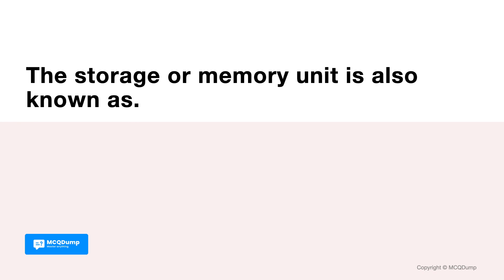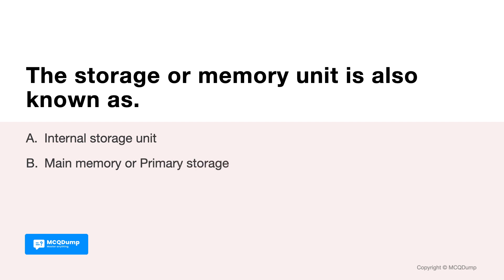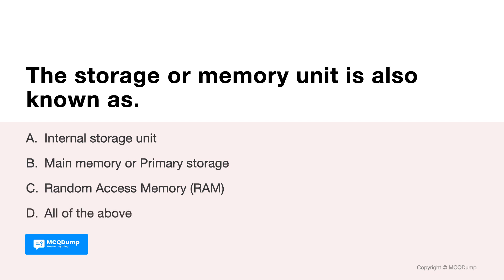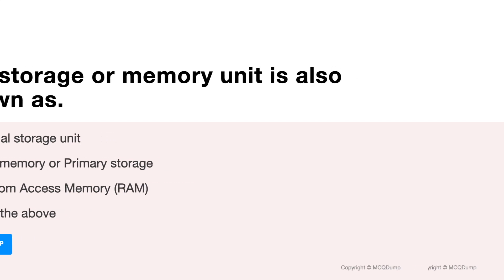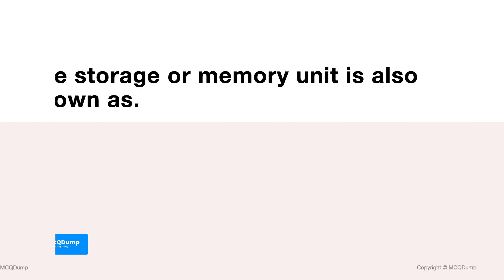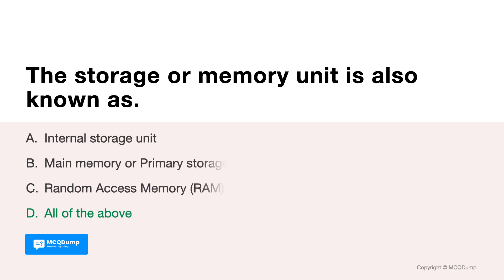The storage or memory unit is also known as: Options are: A. Internal storage unit, B. Main memory or primary storage, C. Random Access Memory (RAM), and D. All of the above. Answer is D. All of the above.